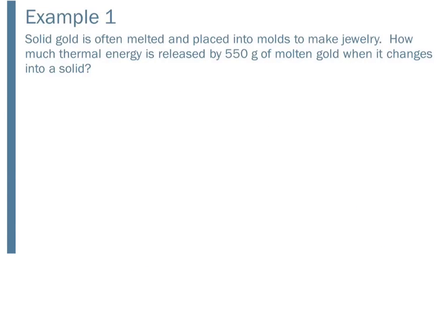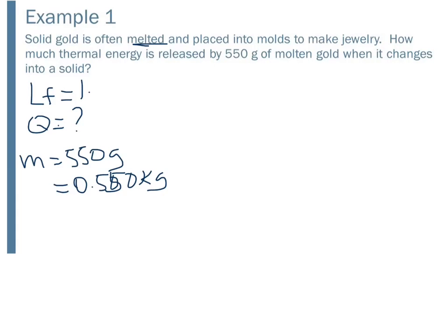Let's just do one quick example. We have solid gold is often melted. So that means we are looking for our latent heat of fusion when we go to look it up. So melted is that solid liquid phase. How much thermal energy is released? So we're looking for our Q value by 550 grams of molten gold when it changes into a solid. So we want to change that mass to kilograms. And then we're going to go look up the latent heat of fusion.